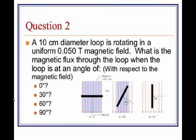All right. Question number two: a 10 centimeter diameter loop—10 centimeter diameter, just want to point that out—is rotating in a uniform 0.5 Tesla magnetic field. What is the magnetic flux through the loop when the loop is at an angle of 0 degrees, 30 degrees, 60 degrees, or 90 degrees? And keep in mind, this is with respect to the magnetic field. So once again, please put these answers in online and come to class on Thursday or next day with any questions. Thank you very much.